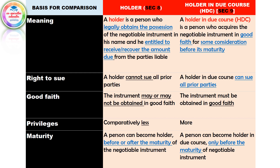In section 8, there are two conditions to be called a Holder. A Holder is a person who legally obtains the possession of the negotiable instrument in his name and is entitled to receive or recover the amount due from the parties liable. Holder is a person who can satisfy these two conditions: legally obtains possession of the instrument in his name, and is entitled to receive that amount.